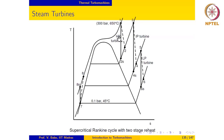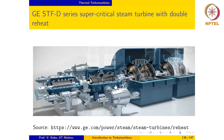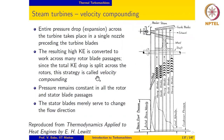What we will look at now is how the expansion in each one of these stages — which itself has a very high expansion ratio — is handled in practical installations. Several strategies have been utilized to deal with this effectively. The first one is called velocity compounding.